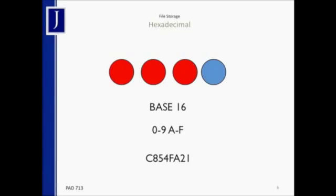When you take all of these bits and bytes and put them together, you get a programming concept or language known as hexadecimal. Hexadecimal is based off of what we call base 16. We've already established that if you have four bits, you have 16 possible options — 16 possible ways of arranging those bits. Computer scientists have assigned a digit or a number to each one of those 16 combination options.